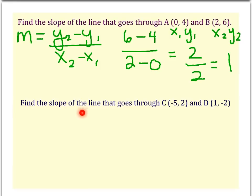The second example asks you to find the slope of a line that goes through points C and D, where point C is (-5, 2) and D is (1, -2). Since I don't have any graph paper here, I am going to use the slope formula.